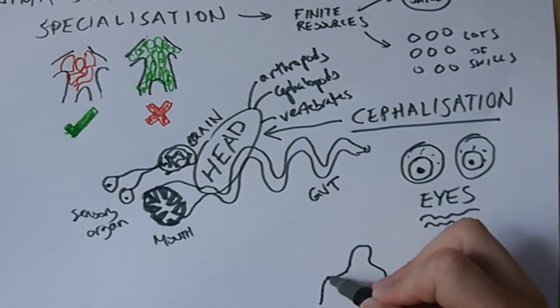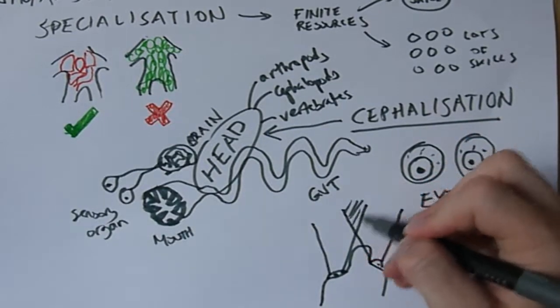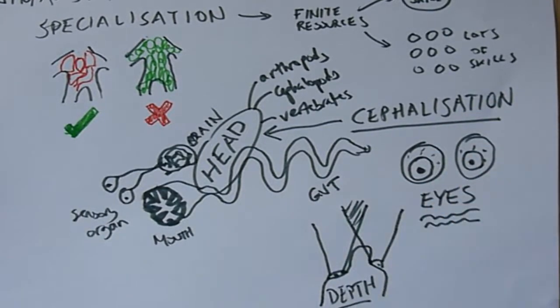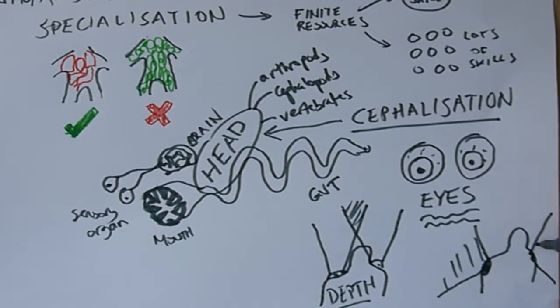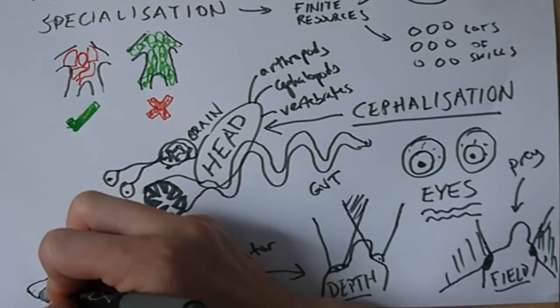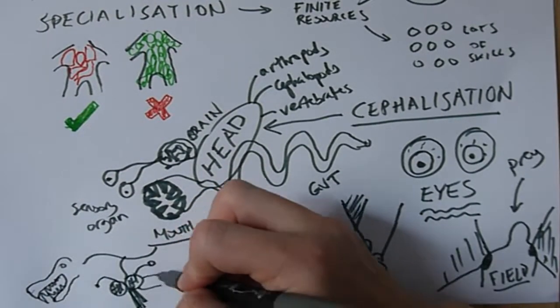If the eyes are facing forward, offering depth perception, you're probably looking at a predator. If the eyes look sideways, giving a wider field of vision, you're probably looking at prey. Now look at the mouth. If the mouth parts look like lethal penetration, it's probably best to run away, obviously.